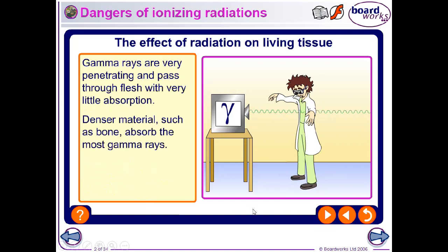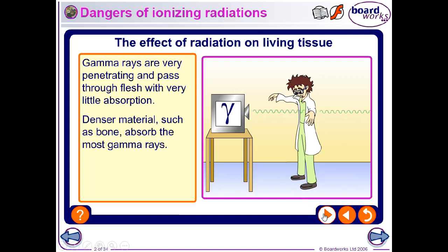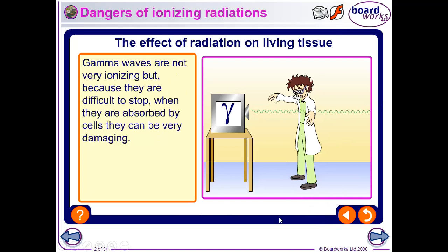Gamma rays are very penetrating; a lot will pass through with very little absorption. Denser parts of the body like bone can absorb more gamma rays. Gamma rays are the least ionizing form of radiation, so a lot will pass straight through the body and cause very little ionization.